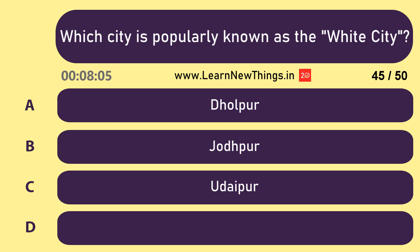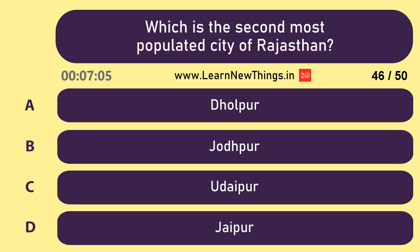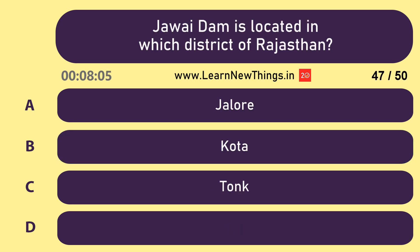Which city is popularly known as the White City? Udaipur. Which is the second most populated city of Rajasthan? Jodhpur. Jawai Dam is located in which district of Rajasthan? Pali.